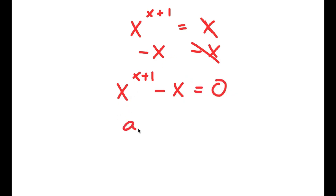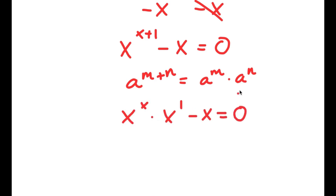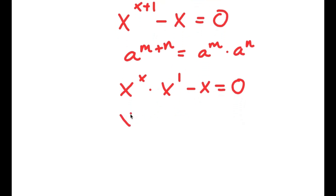Now, if I have something in the form a to the power of m plus n, this equals a to the power of m times a to the power of n. So x to the power of x plus 1 equals x to the power of x times x to the power of 1. Now I have this minus x is equal to 0. If I factor out x, I get x times x to the power of x minus 1 is equal to 0.